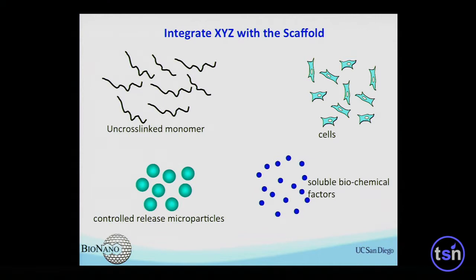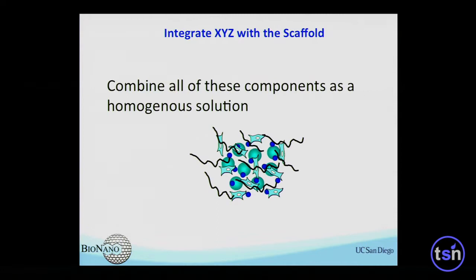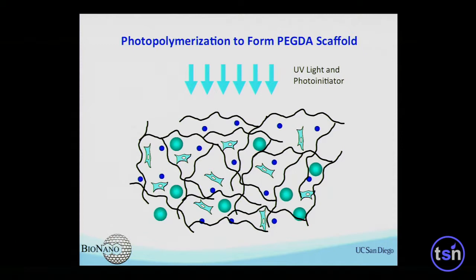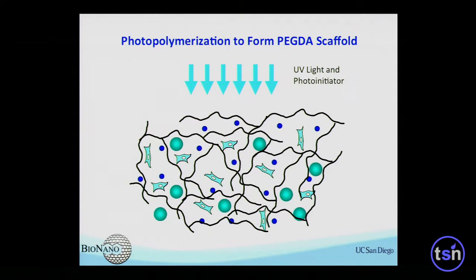This printing process is based on photo-induced polymerization from monomer solution. In the solution, you can put cells, controlled-release particles, other particles, molecules, or even drugs into the system — a homogeneous solution. Then you shine the light, and everything in the light path at the focal spot will be locked up. That's how you print the scaffold with a pattern controlled by light, with cells inside.